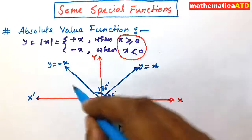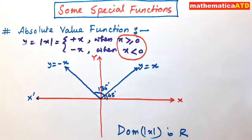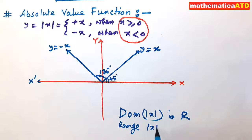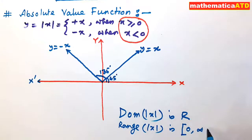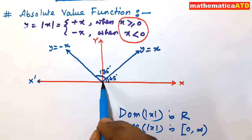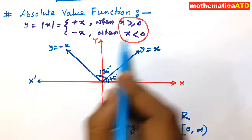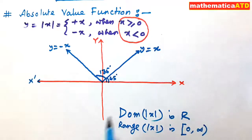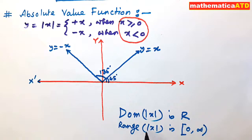Since this curve is above the x-axis, its range is from 0 to positive infinity. The range of |x| is the closed interval [0, +∞). Zero is included because |x| = +x when x = 0, so zero is attained. The range of |x| is [0, +∞).